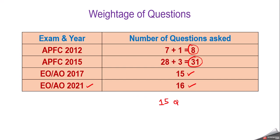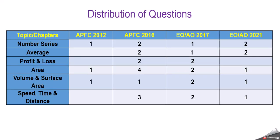When we do the analysis of these four question papers of APFC and Enforcement Officer, we came to the realization that there are chapters or topics which are repeated every time a paper was conducted. From number series, we have got questions every year — two to three questions have been asked in the Enforcement Officer examination.